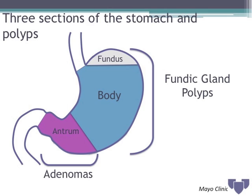The different sections of the stomach are associated with different types of polyps. Fundagland polyps occur in the fundus and body of the stomach. Adenomas occur in the antrum of the stomach.